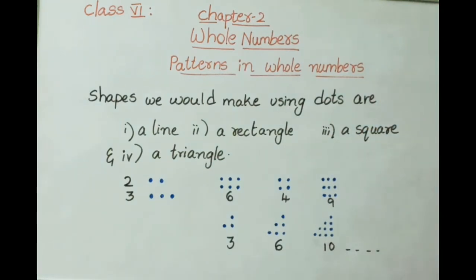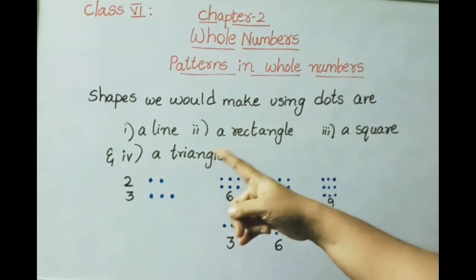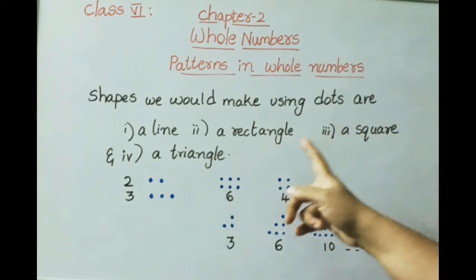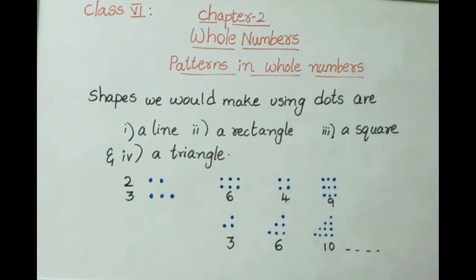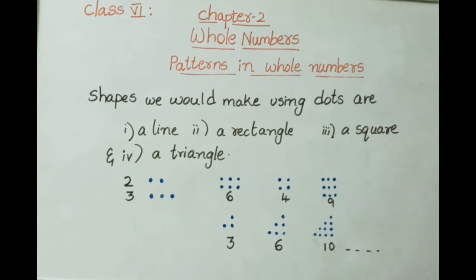We try to arrange numbers in elementary shapes made up of dots. The dots are placed on a grid with equidistant points along the two axes. The shapes we make using dots are a line, a rectangle, a square, and a triangle. Every number should be arranged in one of these shapes. No other irregular shape is allowed.